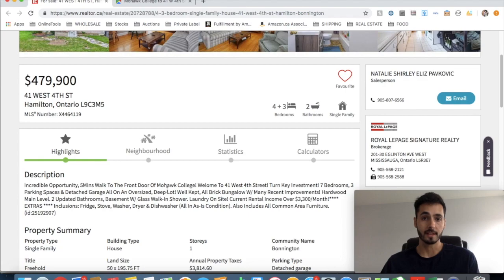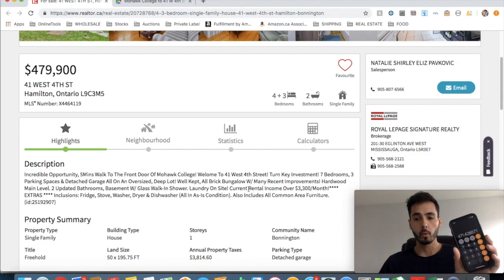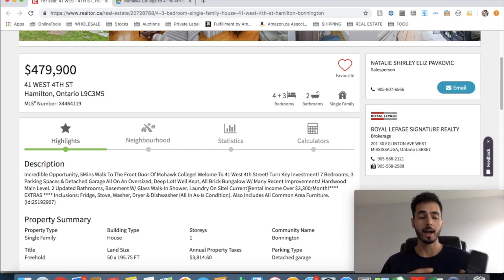It says a detached garage on an oversized lot. Now on a student rental, oversized typically means there's going to be more maintenance involved. So that's something we need to keep in mind. Deep lot - once again, there's probably going to be a lot of grass to cut. Well kept, it's a bungalow, many recent improvements. This is all good. Updated two bathrooms, laundry on site. That's also good, so the students don't have to go anywhere. Now we have a current monthly rental income of $3,300. So what that means is if I take $3,300 and divide that by how many students are occupying the house, that gives me $471 on average per bedroom. Now I know that that is below market average. Depending on the condition of the property, I know that we can get a minimum of $500 per room, depending on what type of product we offer the students. So if that's the case, if we can get $500 times seven, we can jack the rent up to $3,500 a month, which is $200 a month times 12 - that's an extra $2,400 a year. So let's just remember that moving forward when we actually do our analysis.